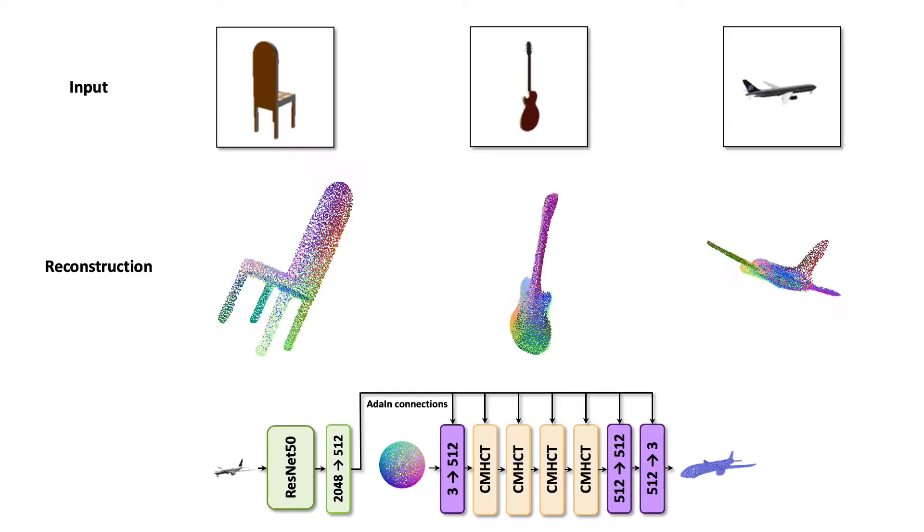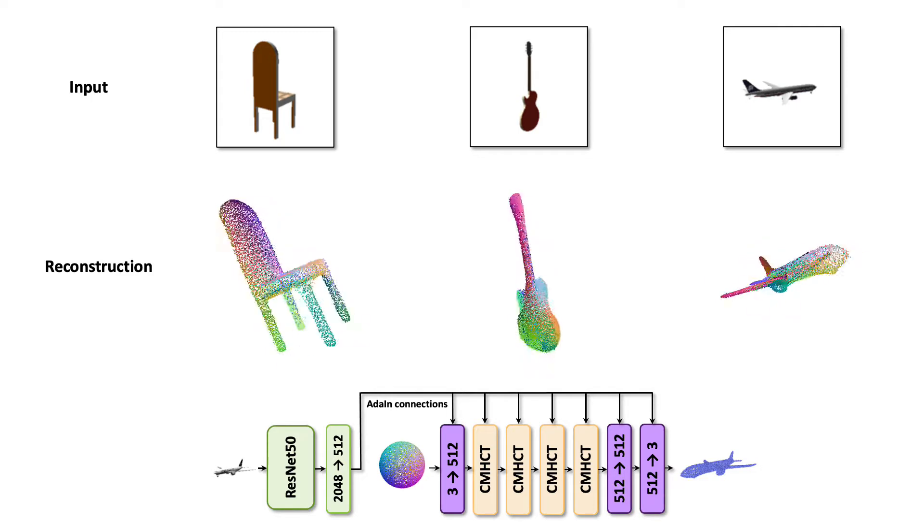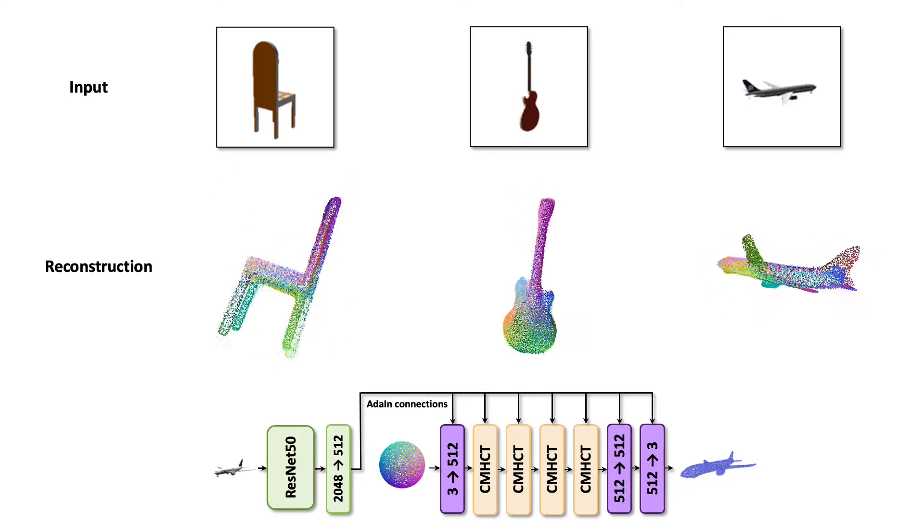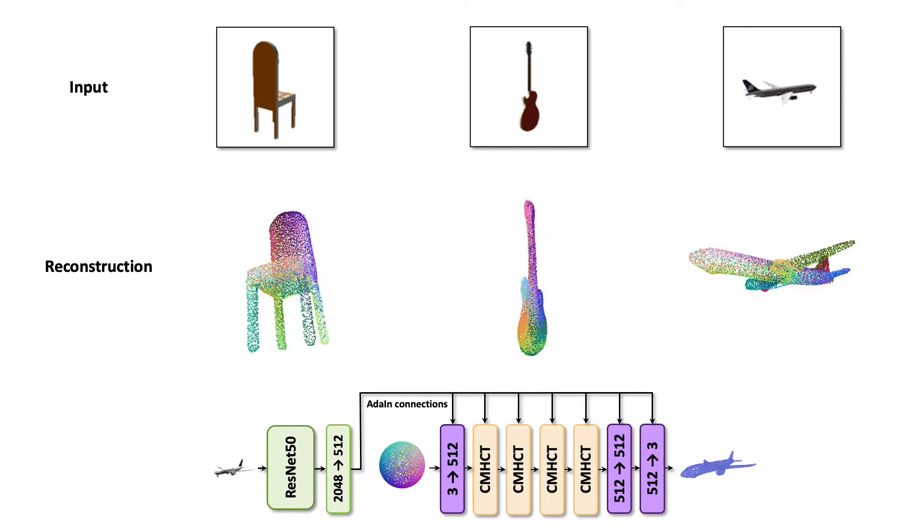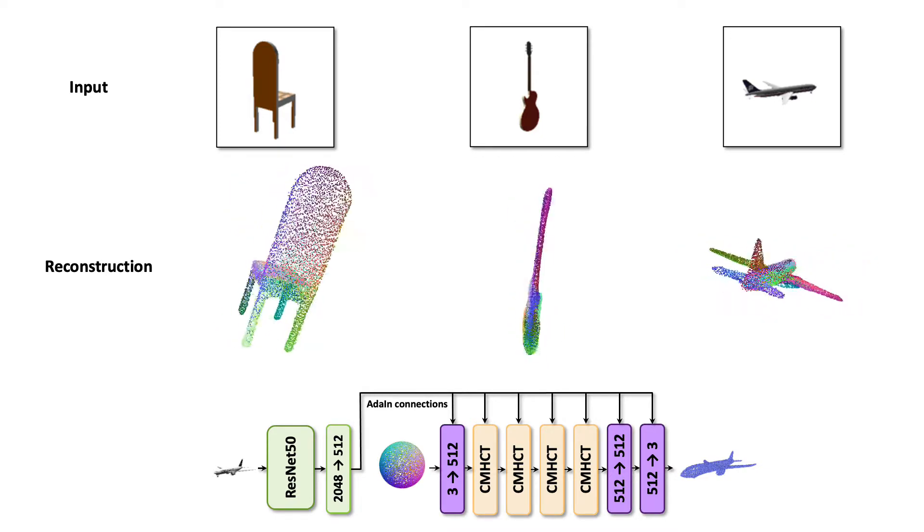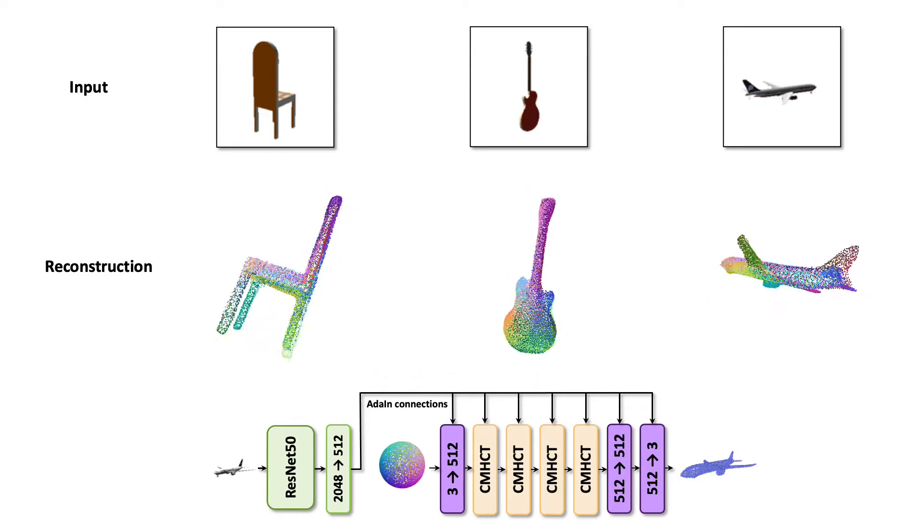Here we show the results of the cloud transformer that reconstructs point clouds from single images. Note that the reconstruction is performed in the image coordinate frame, which is a harder task than performing reconstruction in the object canonical frame. Nevertheless, the cloud transformer managed to correctly use symmetries to recover plausible reconstructions.